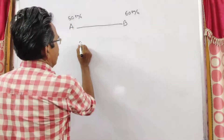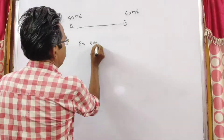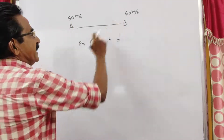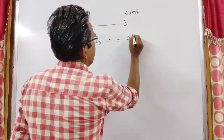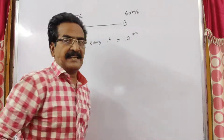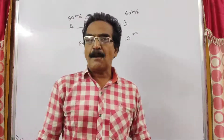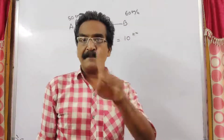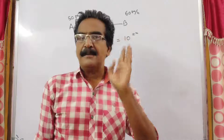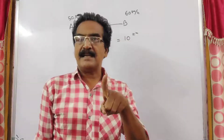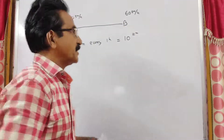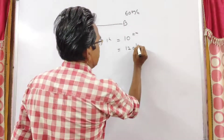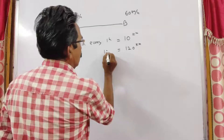In every one hour, the second train travels 10 km more than the first train. Here in the problem, at the time of meeting, the second train has travelled 120 km more than the first train. That means 12 times — so the trains must have met after 12 hours.